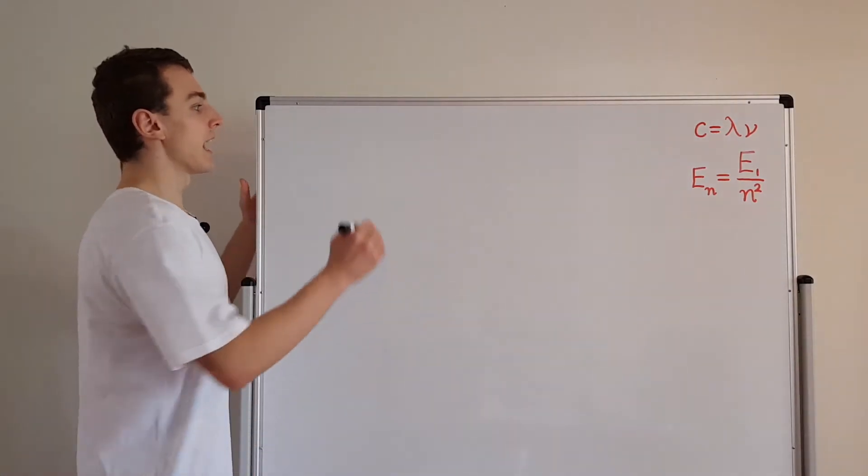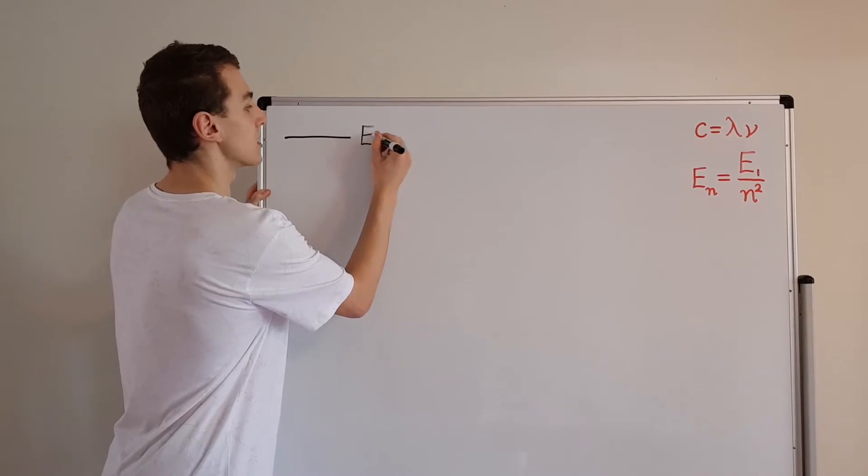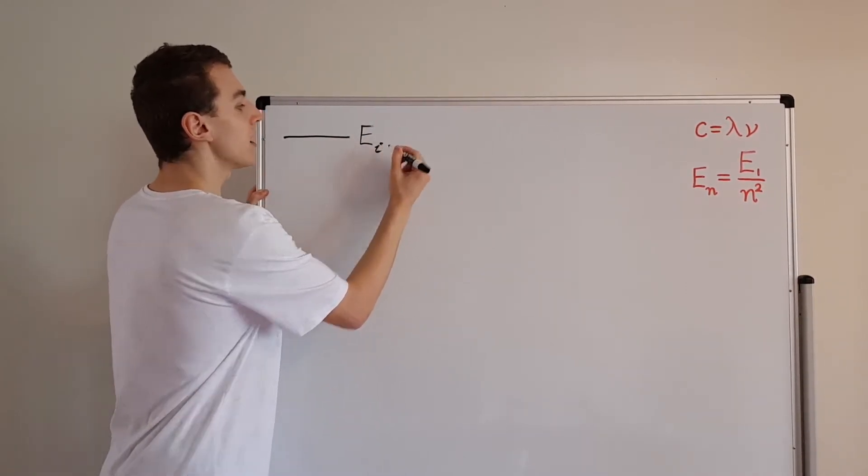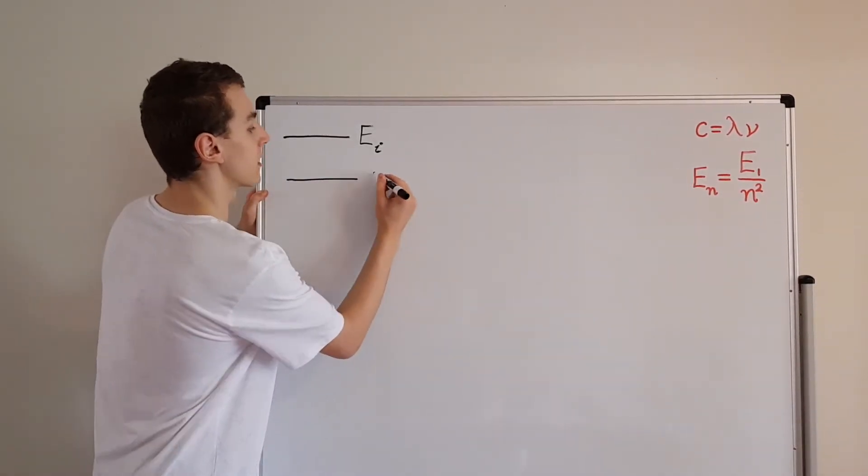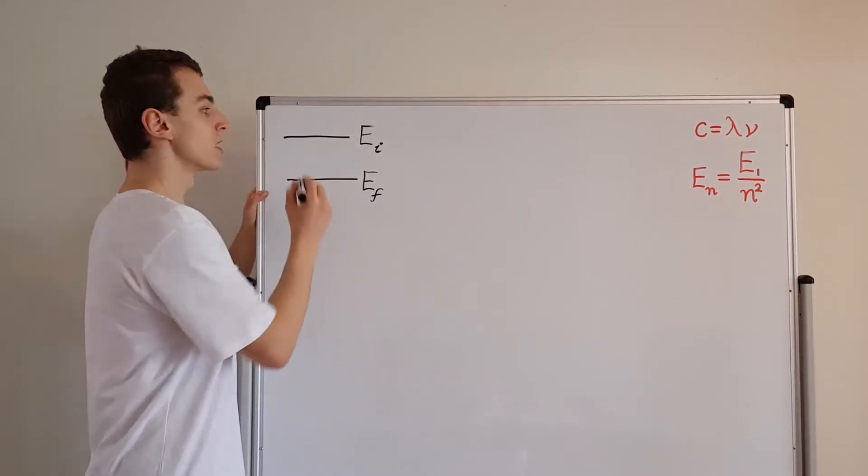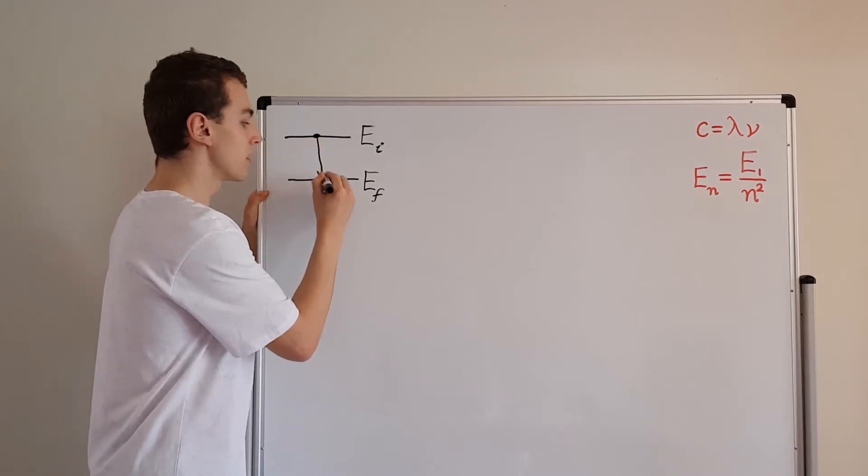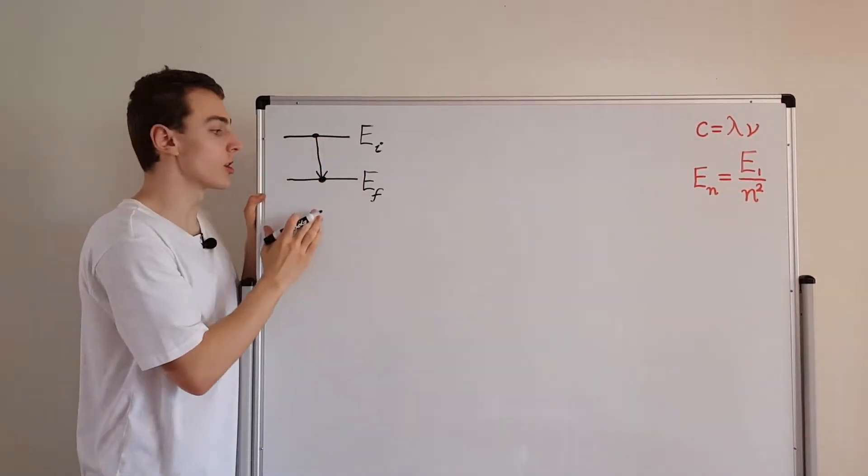First of all, let's imagine an electron in an initial state EI. So this is the initial energy of an electron, and I'm going to use I for initial. Then we've got a final energy, I'm going to call that EF. That's the final energy of the electron. So the electron starts up over here, and it drops down to the final state. So it started in a higher state, and it's finished in a lower state.